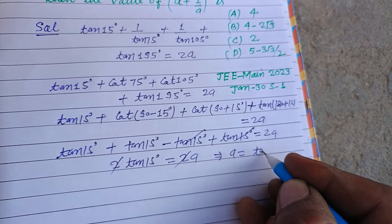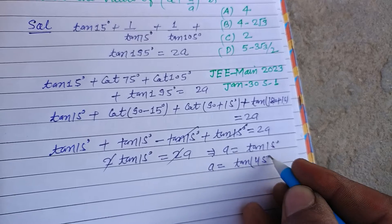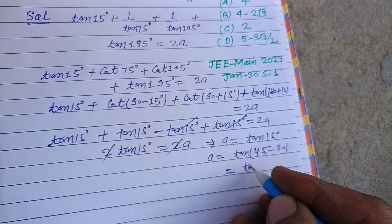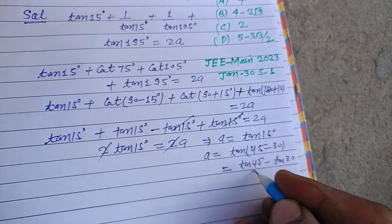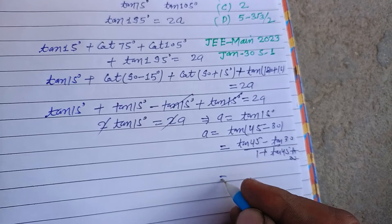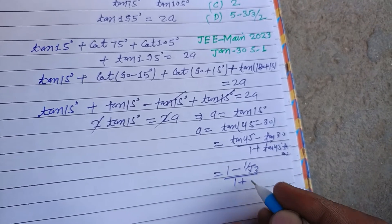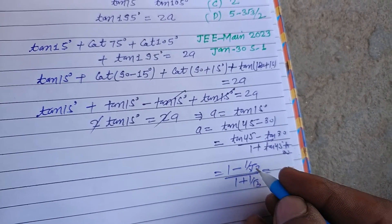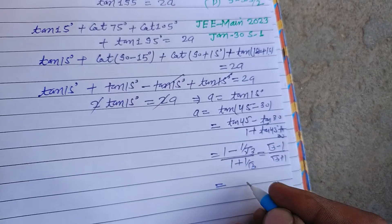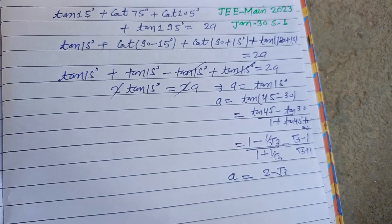The value of tan15 can be obtained using tan(45 - 30), applying the formula (tanA - tanB)/(1 + tanA·tanB). This gives (1 - 1/√3)/(1 + 1/√3), which simplifies to (√3 - 1)/(√3 + 1). On solving, we get 2 - √3. So a = 2 - √3.